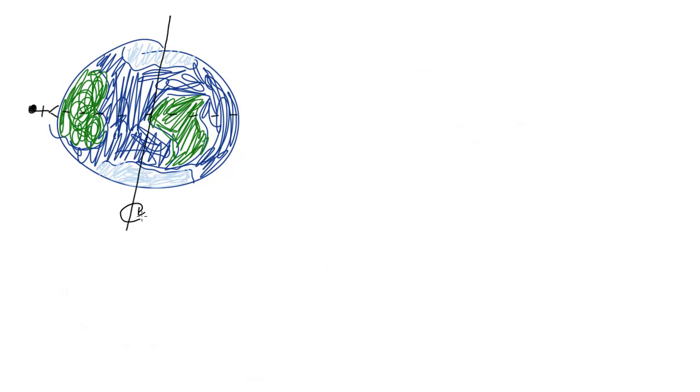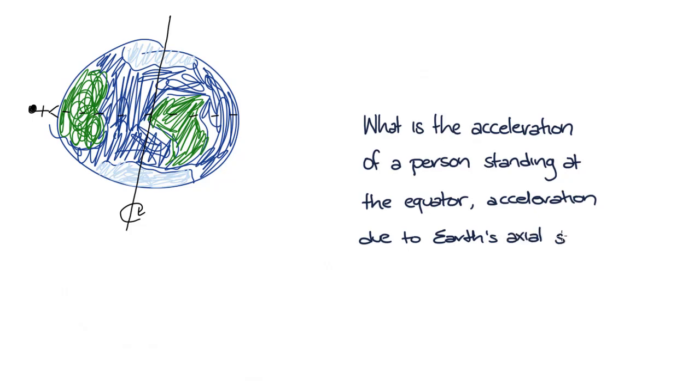So let's imagine somebody standing at the equator on Earth. The Earth is rotating about its axis once every day. What is the acceleration of a person standing at the equator due to the Earth's axial spin?